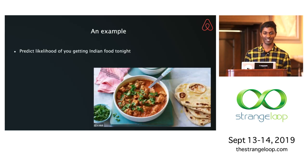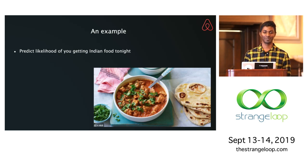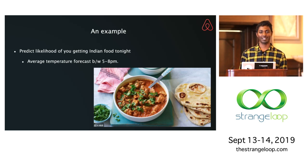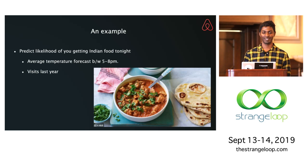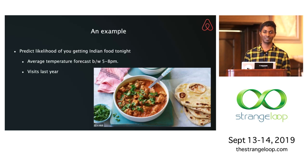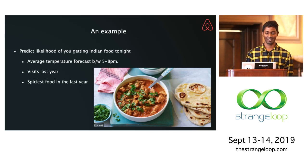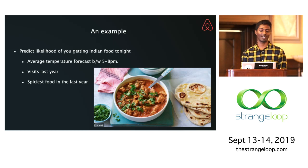Here's an example: predicting if you're going to get Indian food tonight. One intuition is that hot weather and hot food don't go well together, so maybe the average temperature between now and before dinner is a signal. Or maybe people who are into Indian food behave like addicts — it's a habit. So maybe we look at how many times you had Indian food last year. Or maybe you haven't tried Indian food yet, but if you're tolerant to spicy food, you're willing to give it a shot.